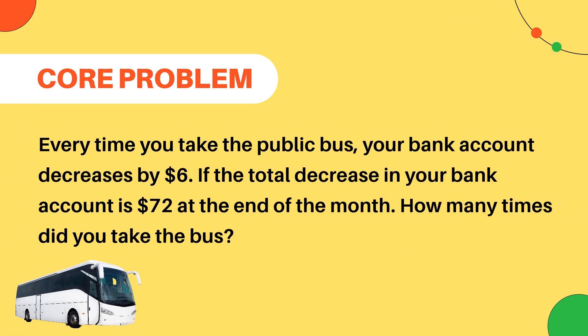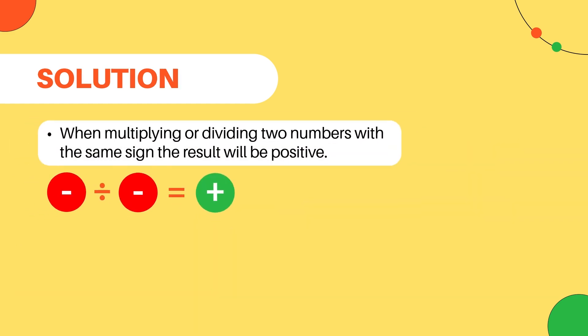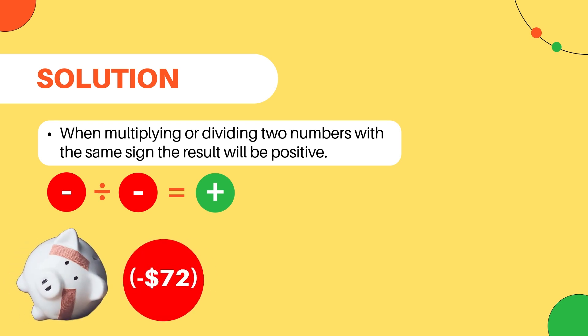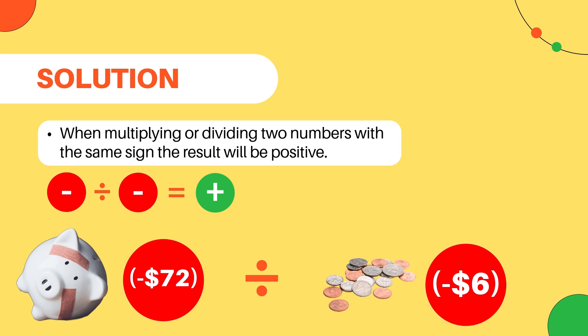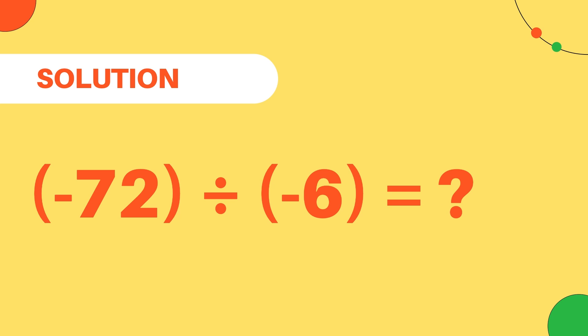Let's look at another real-life problem for some of the other rules for multiplying and dividing integers. Every time you take the public bus, your bank account decreases by $6. If the total decrease in your bank account is $72 at the end of the month, how many times did you take the bus? To solve this problem, we can use the rule that dividing two integers with the same sign results in a positive integer. We can represent the total decrease with the negative integer negative 72, since it is money you spent. We can do the same for the cost of each bus trip and use negative 6. So we can rewrite the problem as negative 72 divided by negative 6.